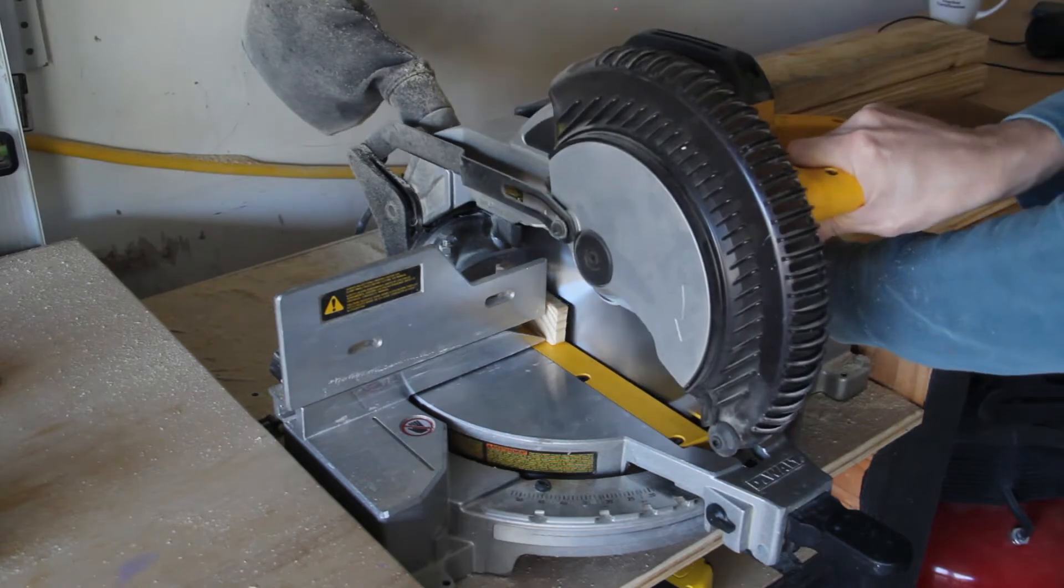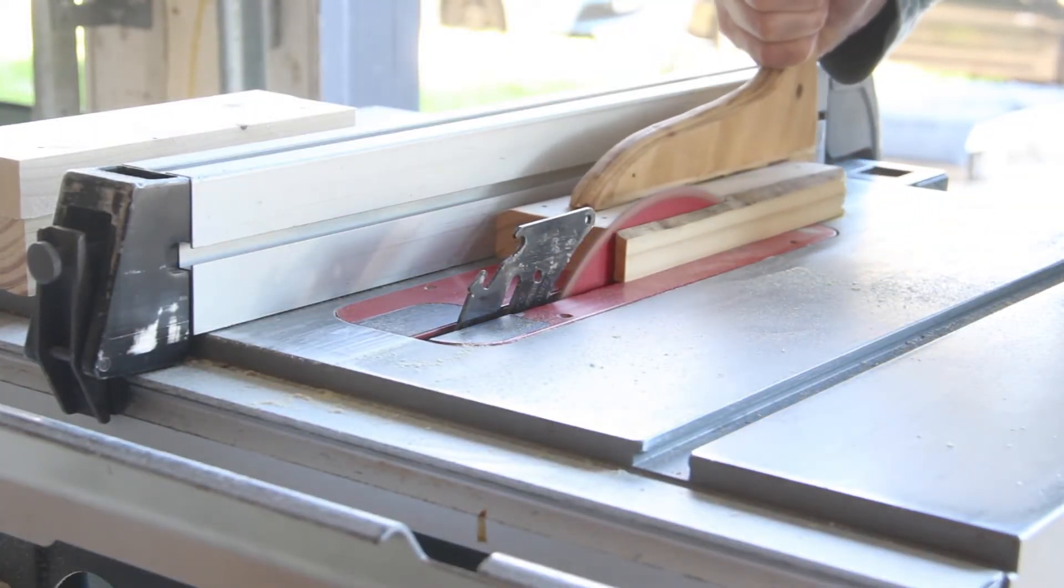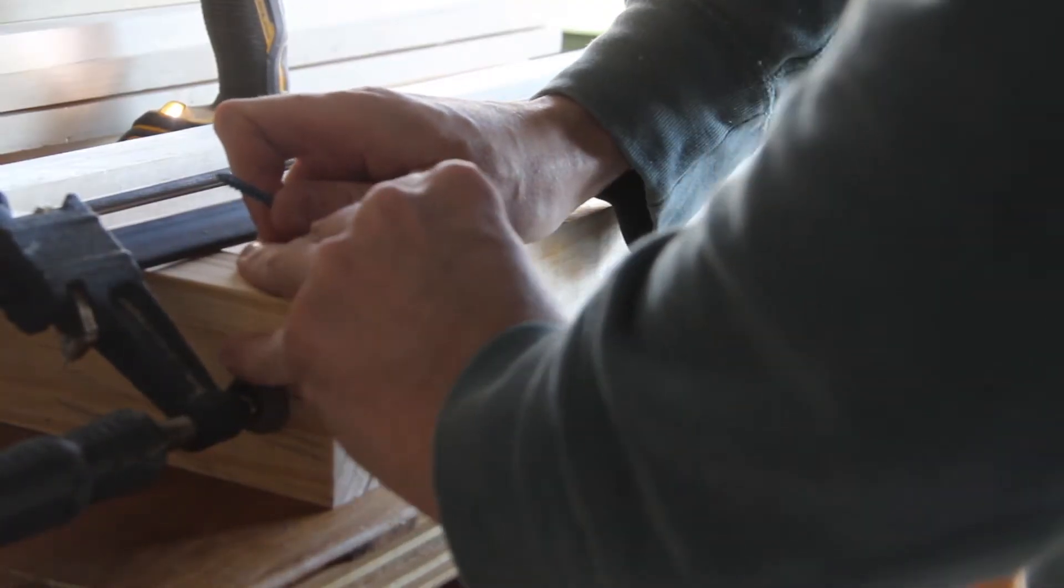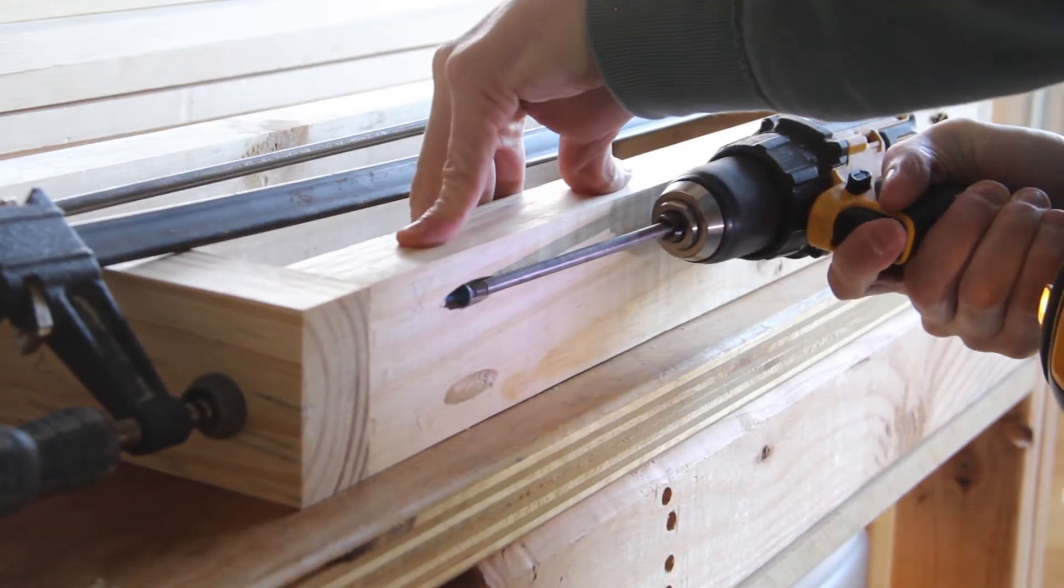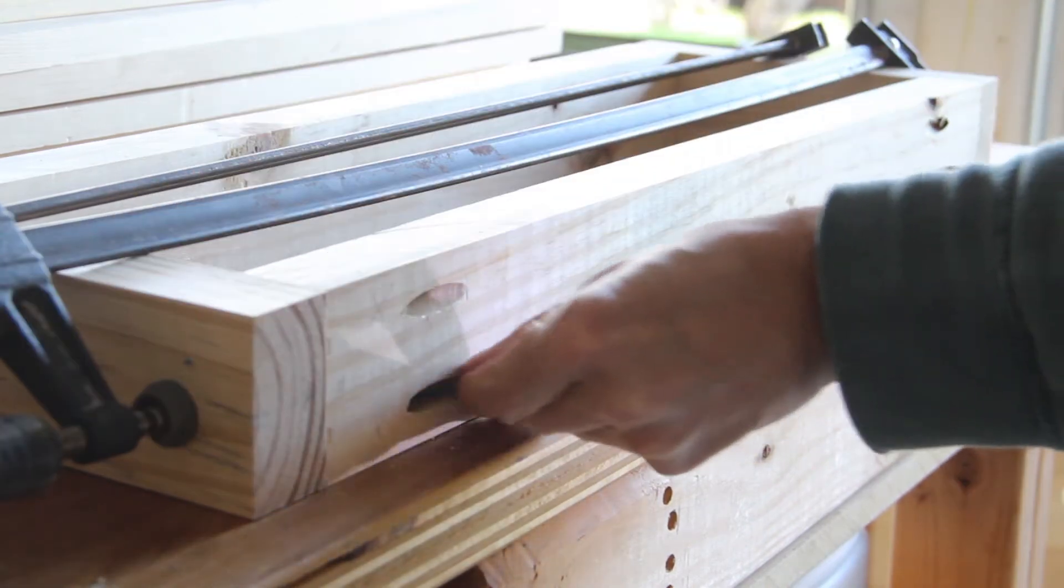Next I built the frames for the shelf using 2x4s. Now I ripped three quarters of an inch off of each piece of wood for the frame so that when a three quarter inch shelf was sitting on it later it would sit flush with the three and a half inch trim I'm going to use. And then I secured these together with pocket hole screws which are going to be covered up by the trim anyways.